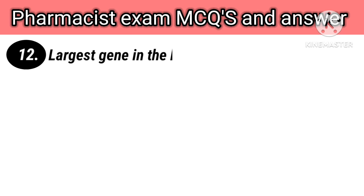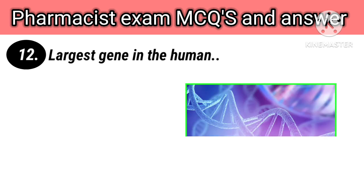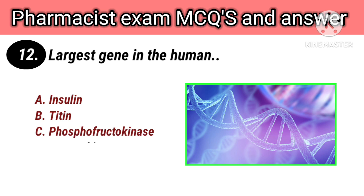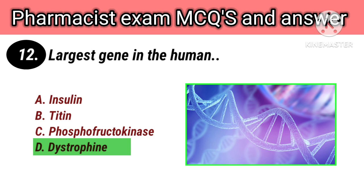Largest gene in human options: A. Insulin, B. Titin, C. Phosphofructokinase, D. Dystrophin. Right answer is D. Dystrophin.